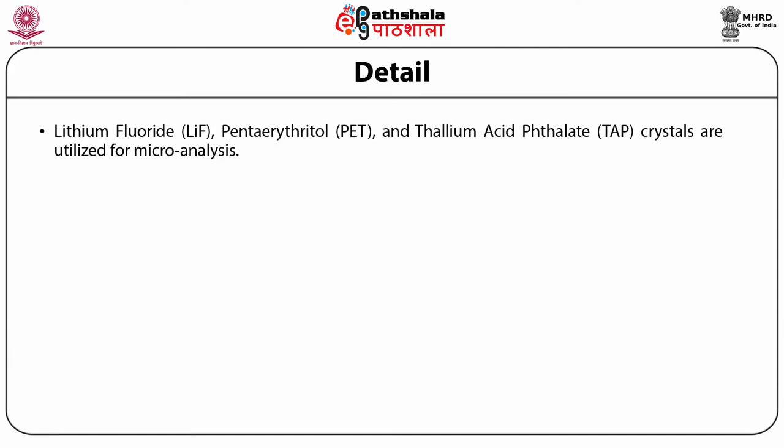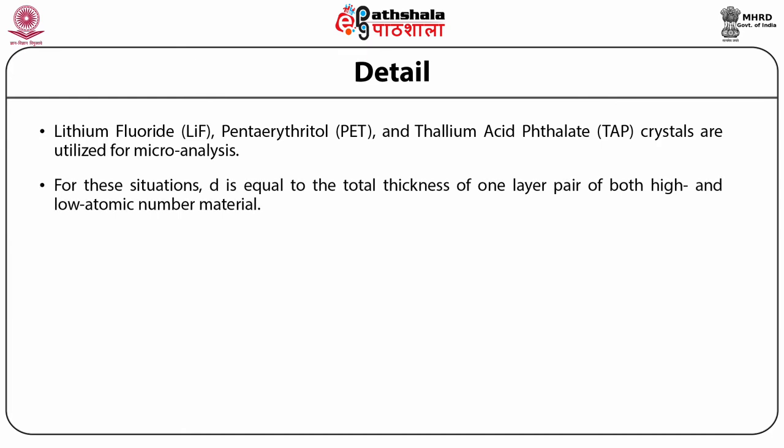Lithium fluoride (LiF), pentaerythritol (PET) and thallium acid phthalate (TAP) crystals are utilized for micro-analysis. The wavelength range covered by using these three crystals is lambda of the order of 1 to 24 angstroms. For longer wavelengths, layered synthetic multi-structures comprising numerous interchangeable sheets of high and low atomic number materials such as tungsten/silicon, nickel/carbon and molybdenum/boron-carbon are used. For these situations, d is equal to the total thickness of one layer pair of both high and low atomic number materials.